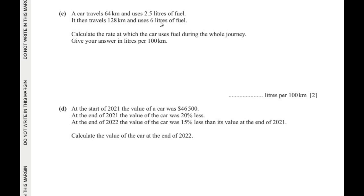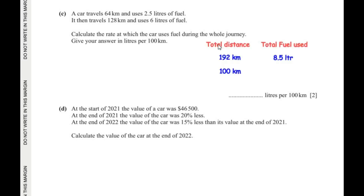Moving on to the next sub-question. A car travels 64 kilometers and uses 2.5 liters of fuel. It then travels 128 kilometers and uses 6 liters of fuel. Calculate the rate at which the car uses fuel during the whole journey, giving the answer in liters per 100 kilometers. The total distance is 64 + 128 = 192 kilometers, and the total fuel used is 2.5 + 6 = 8.5 liters.